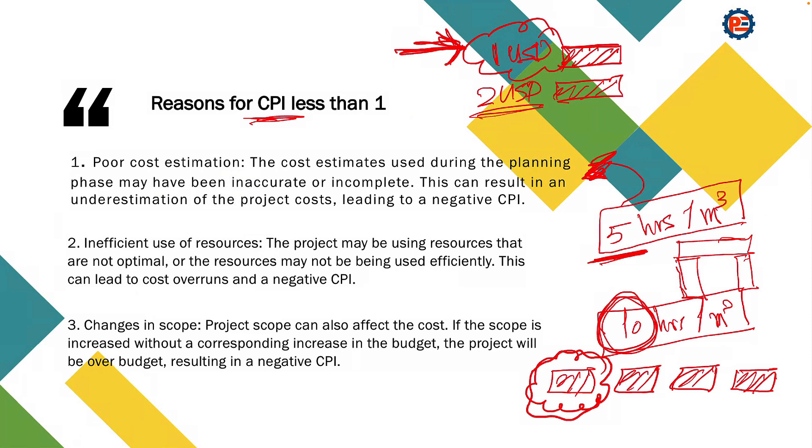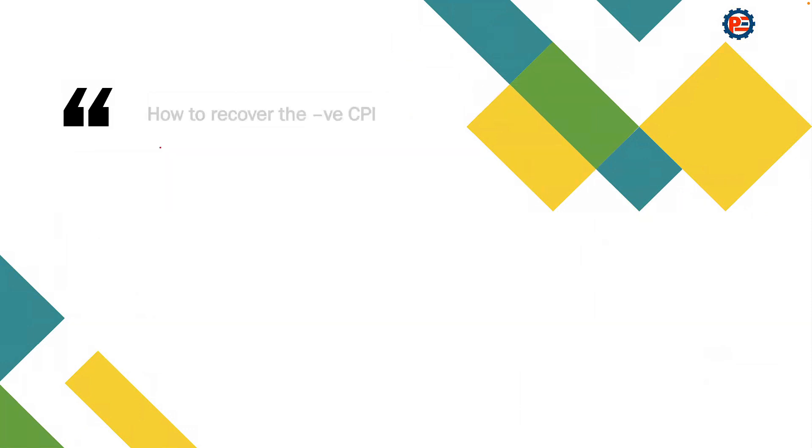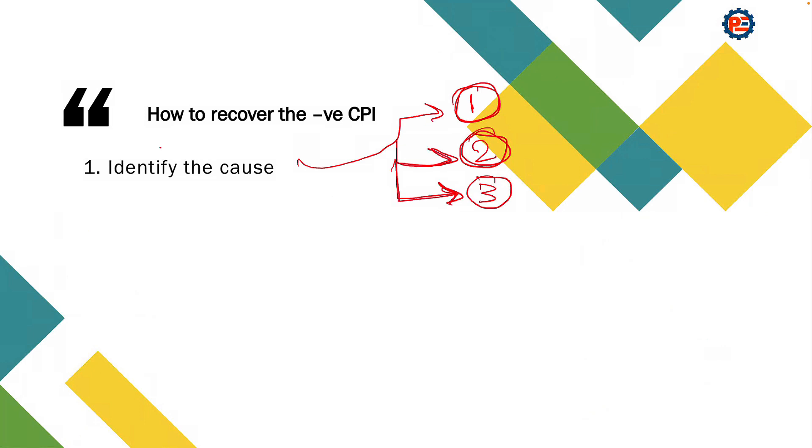So these are the three main reasons of CPI less than one. How to recover the negative CPI? In order to recover the negative CPI, you should first identify the case. We have one of three cases, as we discussed: whether you have inaccurate estimation, or you have poor productivity rates, or you have additional scope of work or variation order. First of all, you need to identify the reason behind the negative CPI.